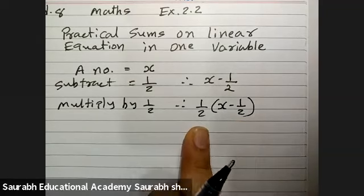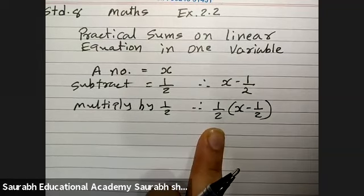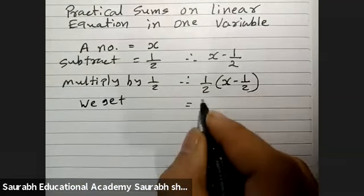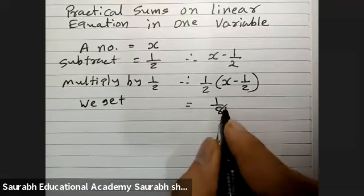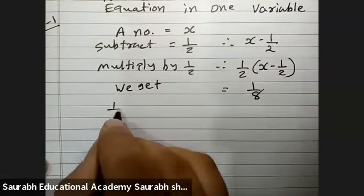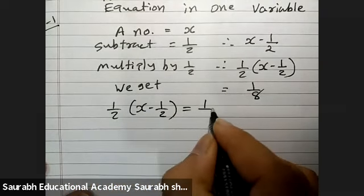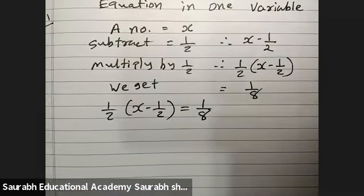The result is multiplied with 1 by 2, you will get 1 by 8. We get 1 by 8, that is the result. So, 1 by 2 into bracket x minus 1 by 2 equals 1 by 8.